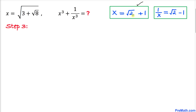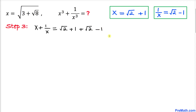So we have established that x equals √2 + 1 and 1/x equals √2 − 1. Now we find x + 1/x: substituting in, the +1 and −1 cancel, leaving √2 + √2, which equals 2√2.